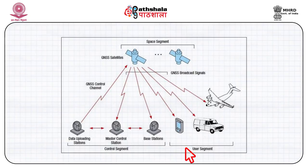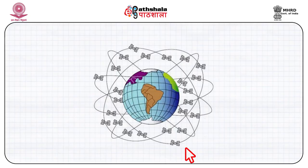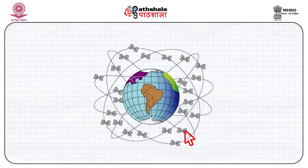Figure 2 shows the GNSS space segment, which precisely shows the constellation of satellites. As I said, there are 6 orbits, and in each orbit, if you see the small bird-like appearances, those are nothing but satellites. That is the space segment. This diagram gives a clear impression that satellites continuously move in their fixed orbits at a fixed speed and velocity.